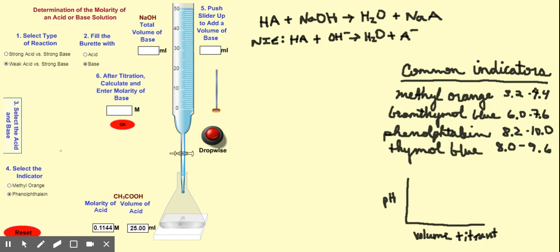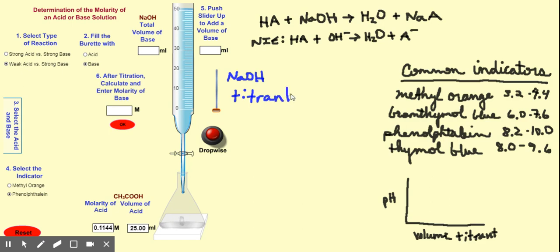I have a computer simulation of a titration setup, and we're actually going to be doing this in lab so you'll get the real-life experience later on. What I have in this burette — this long skinny tube — is sodium hydroxide, NaOH. Whatever is present in your burette is called your titrant — it's the stuff you're titrating with.